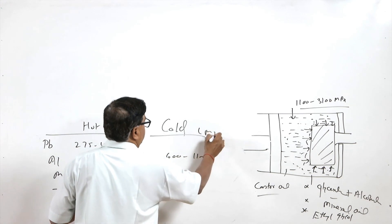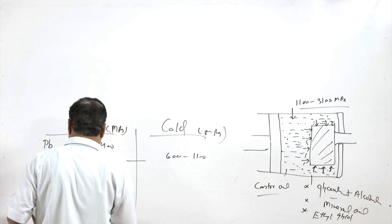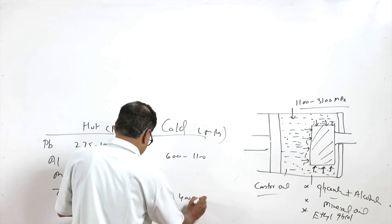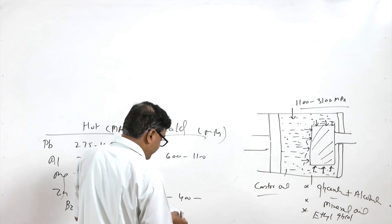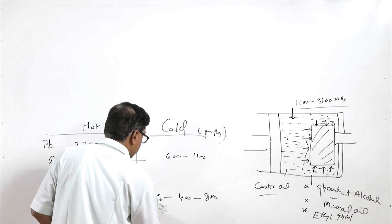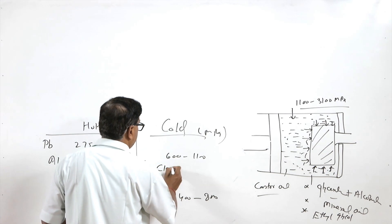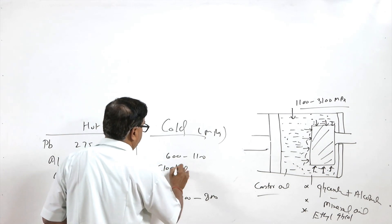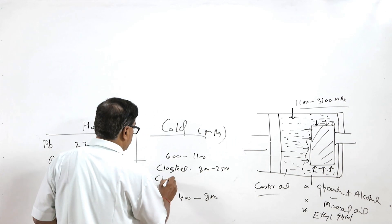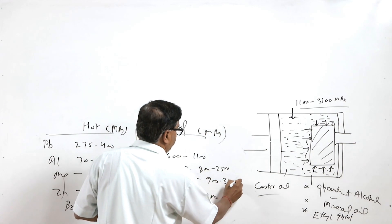For copper alloys it is 400 to 800 MPa, and for steels like C10 steel it is further higher — 900 to 3100 MPa.